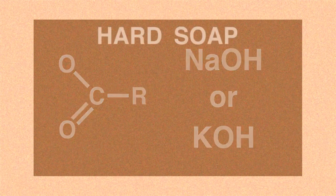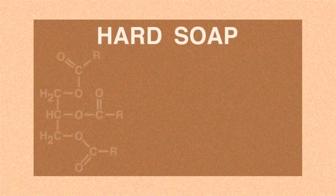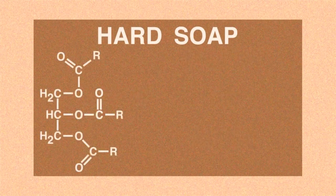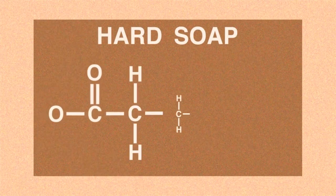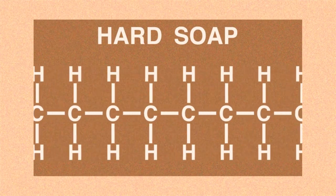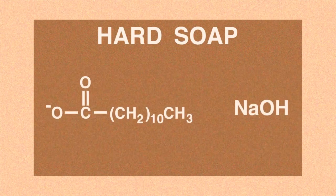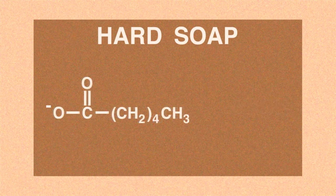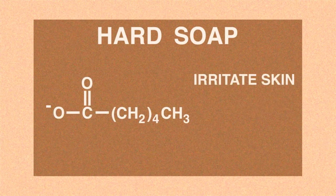Typically, hard soaps are made when fatty acid esters with R groups containing 12 carbons or more use sodium hydroxide in a saponification process. Fatty acid esters with 6 carbons or less are not used as they irritate the skin and smell pretty funny.